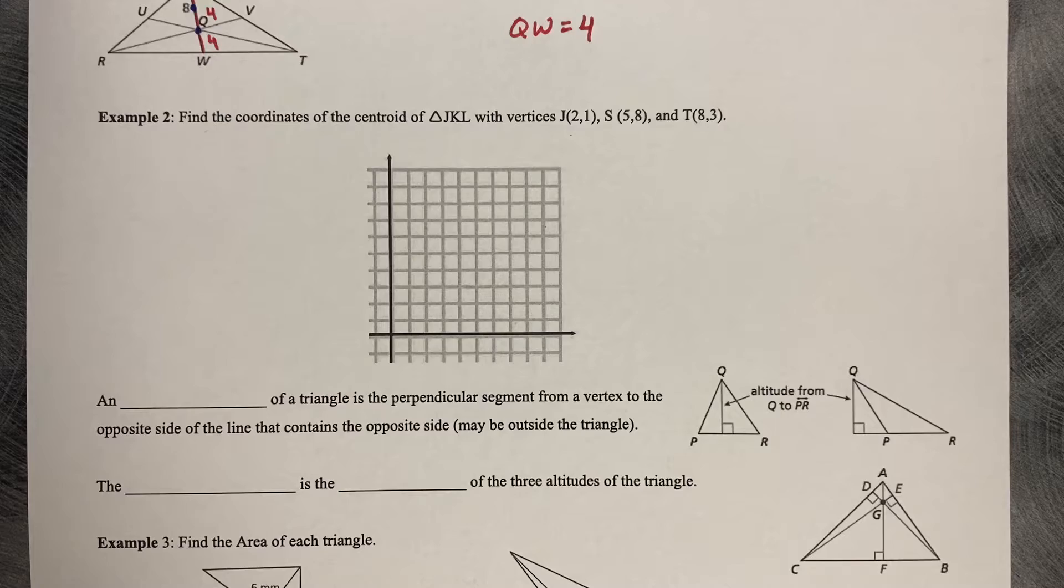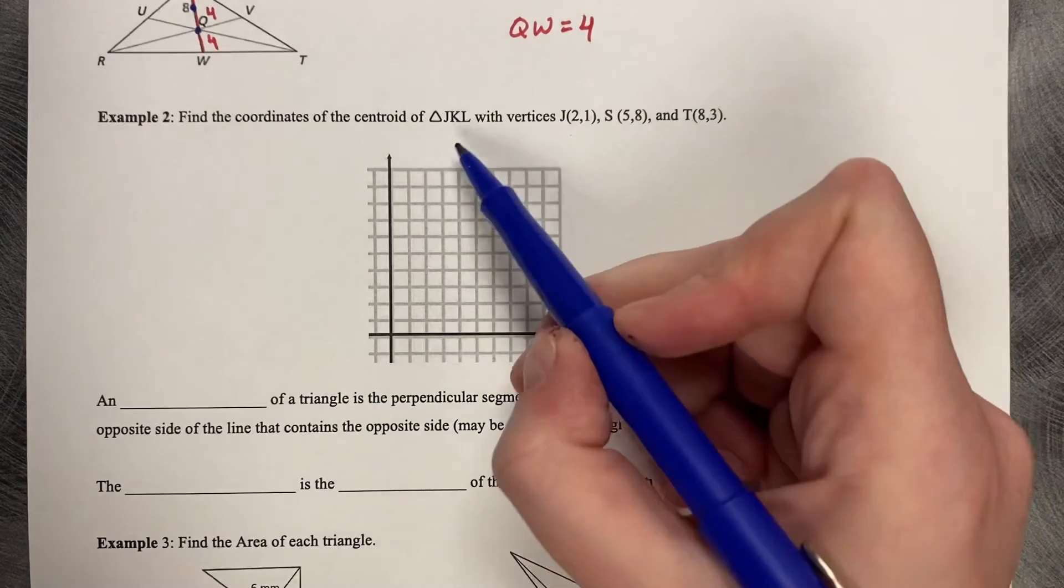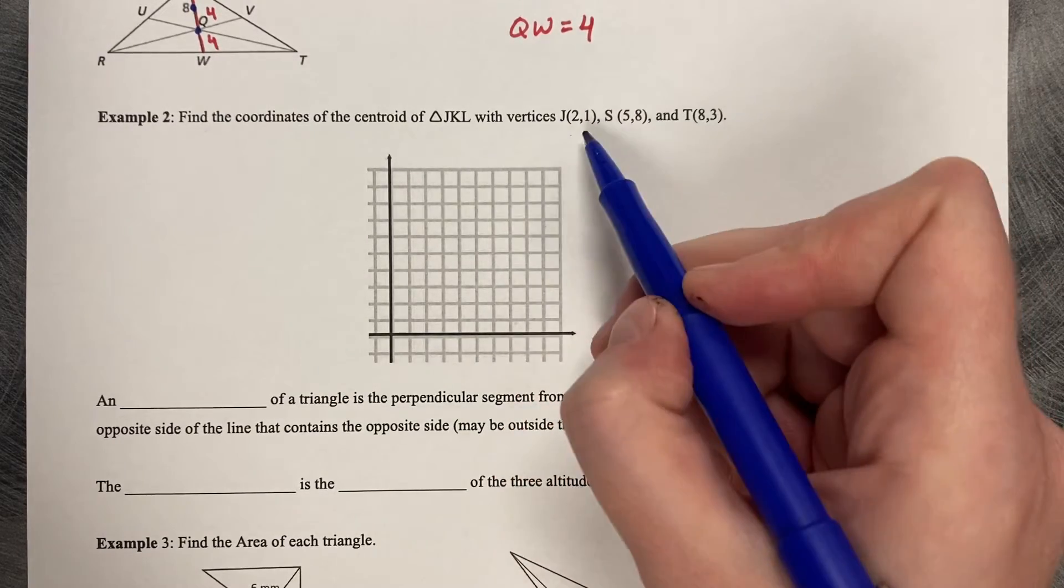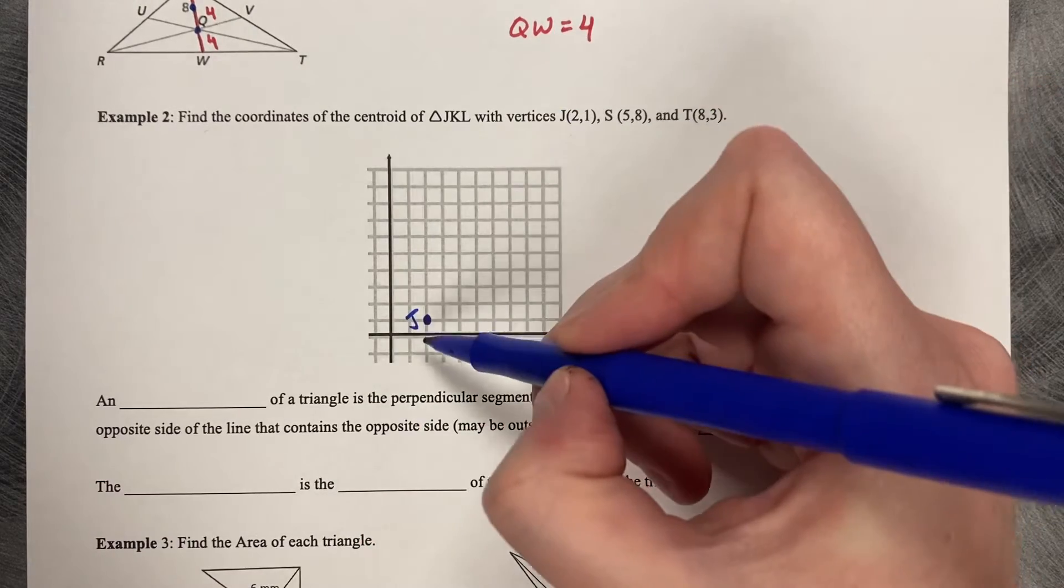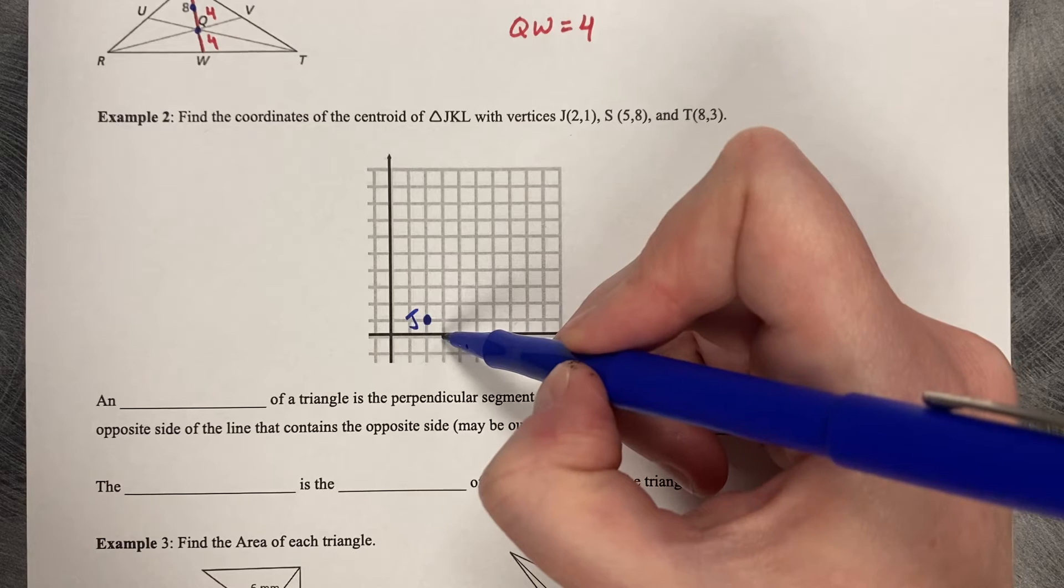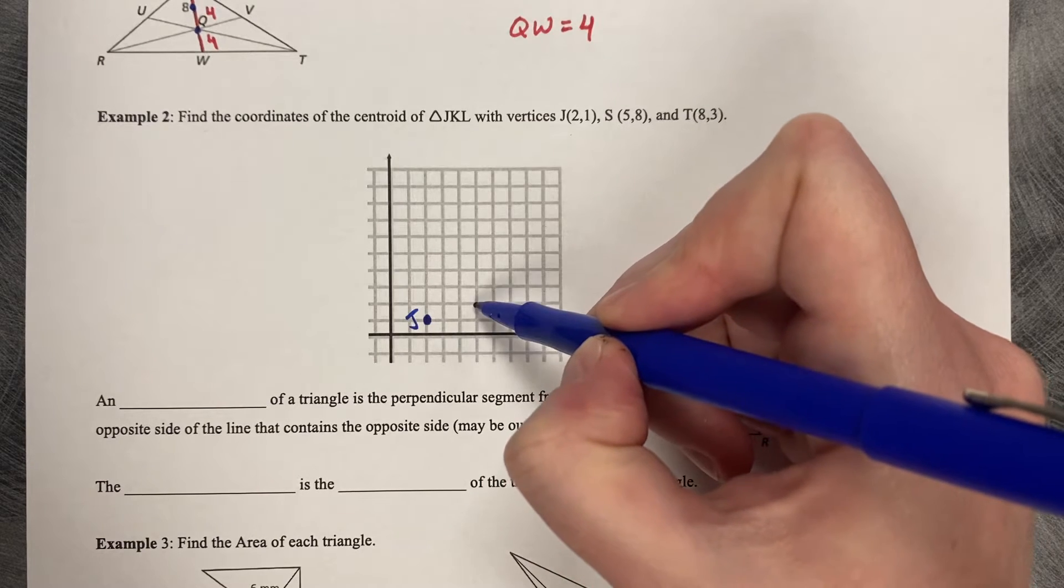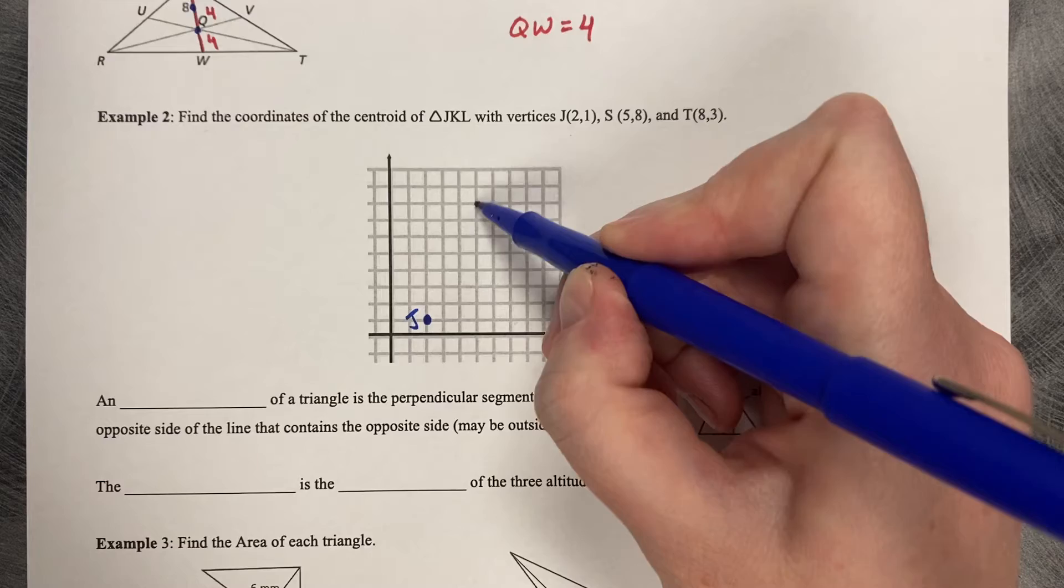Find the coordinates of the centroid of triangle JKL with vertices J at 2, 1, K at 5, 8, and L at... [drawing coordinate grid from 1 to 8].